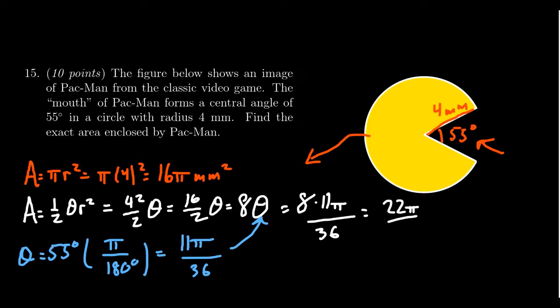On the bottom, you cancel out a four that'll leave behind a nine. So the area of the sector, the area of his mouth, is 22 pi over nine. That's not the area of Pac-Man.